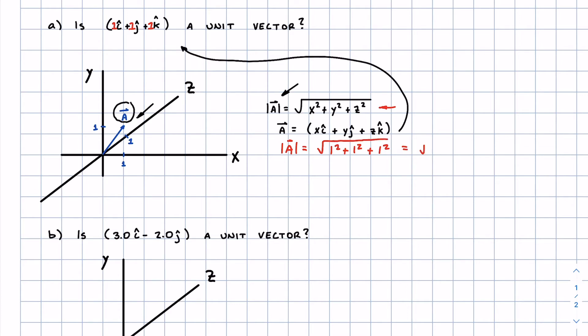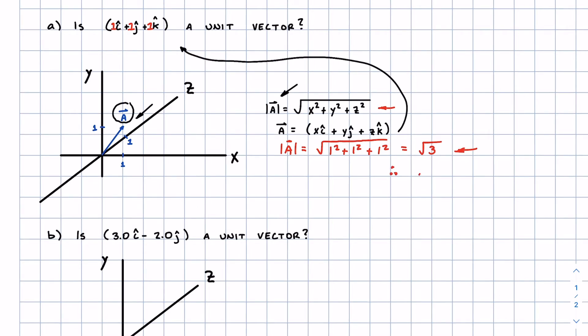Which equals the square root of three. Now they're asking, is this a unit vector? What do you think? Does this have a magnitude of one? No, it has a magnitude of root three, so therefore not a unit vector.